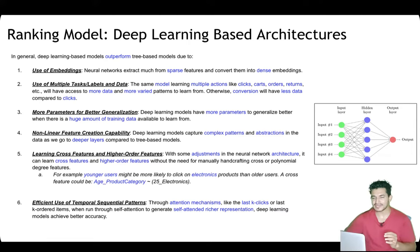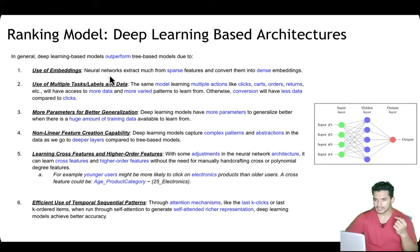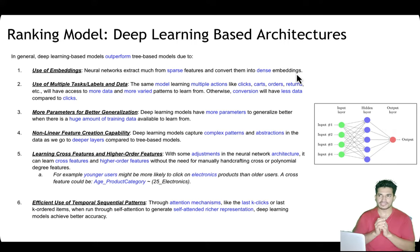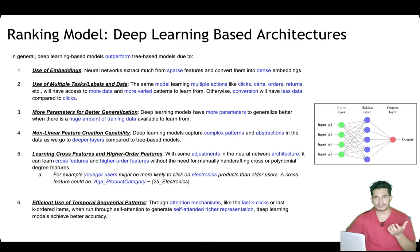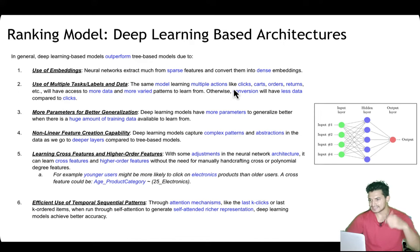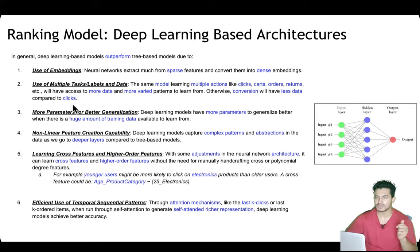All modern-day ranking models are based on deep learning. First, neural networks extract much from sparse features and convert them into dense embeddings — for example, converting categorical features into dense vectors — which helps better predict click or conversion probabilities. Second, multitask learning allows a single model to learn from multiple action labels like click, cart, order, and return, giving the model access to more varied data.